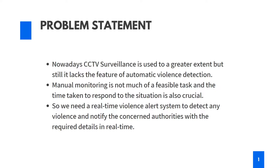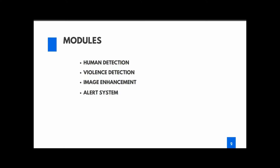With less manpower to monitor them, violence detection can be challenging, especially in the case of crowded scenes because of rapid movement and overlapping. There's no use in detecting violence if we can't use it to alert the concerned authorities, so an efficient alert system is needed. Now we'll be moving to the modules. There are four modules in our project: human detection, violence detection, image enhancement, and the alert system.